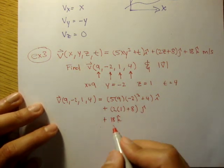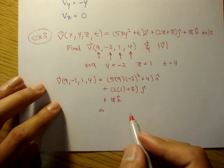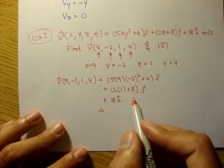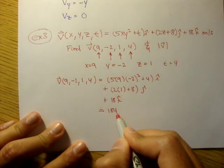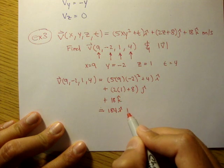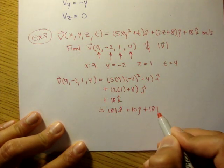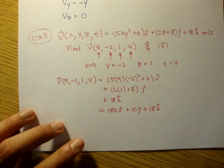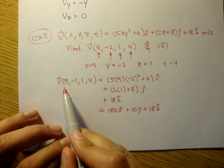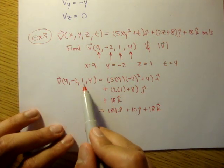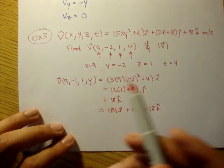And you do the math, that comes out to be 184i plus 10j plus 18k. That's our velocity field, at the position 9, negative 2, 1, and at time equals 4.